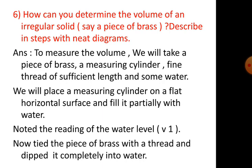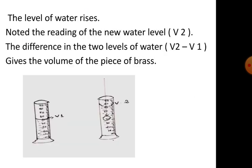We will place a measuring cylinder on a flat horizontal surface and fill it partially with water. Note the reading of the water level as V1. Now, tie the piece of brass with a thread and dip it completely into water. The level of water rises.